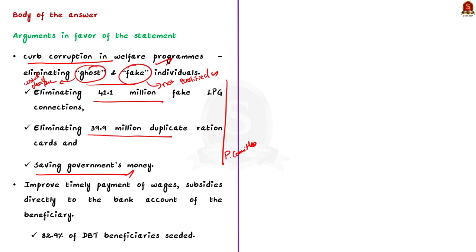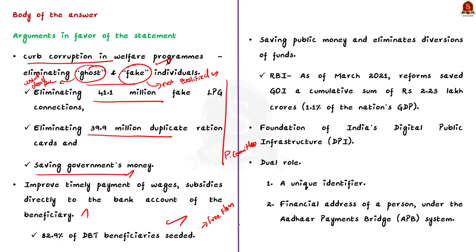The second advantage is that it helps improve the timely payment of wages and subsidies directly to the bank account of the beneficiary. Data from the Ministry of Electronics shows that 82.9% of direct benefit transfer beneficiaries are now seeded with Aadhaar, ensuring a seamless flow of funds. Thirdly, Aadhaar in public service delivery helps in saving public money and eliminates diversion of funds. According to RBI, as of March 2021, Aadhaar and direct benefit transfer have saved the government of India an accumulated sum of 2.23 lakh crores, about 1.1% of GDP.